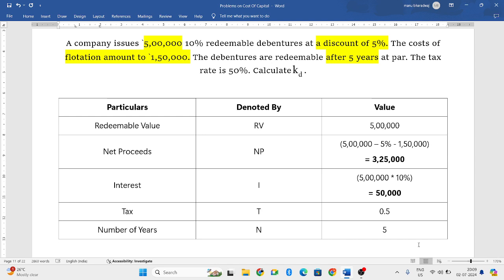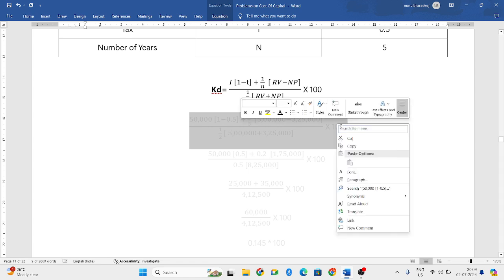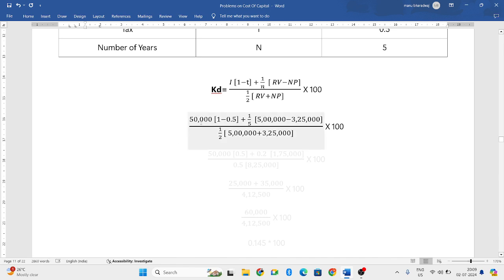Take a screenshot of this table because all these values we have to put it in our formula. Now, this is our formula. Let us try to implement the values for this formula. So, I is 50,000. Tax is 0.5. RV is 5,00,000. And NP is 3,25,000 that is net proceeds.